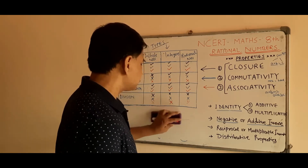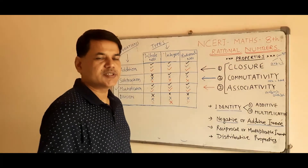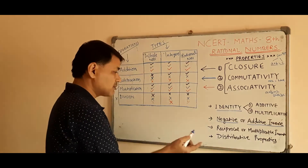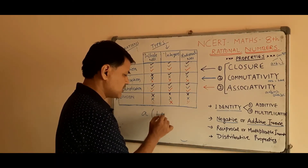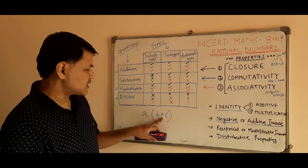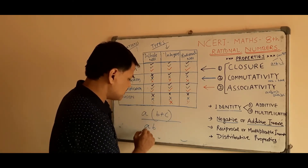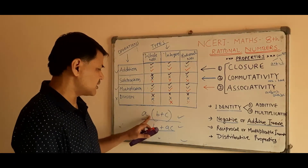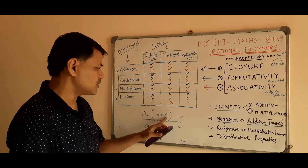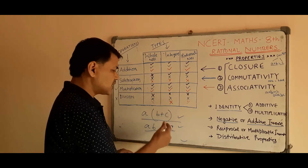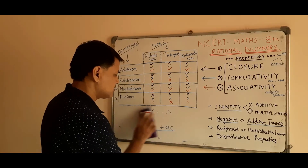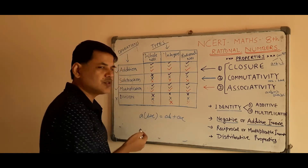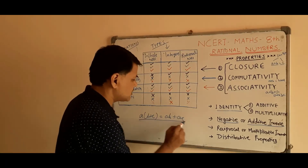The next and last topic is distributive property. As the name suggests, it is about distributing. In case of multiplication of one number with the sum of others — whether we sum first and then multiply, or multiply first and then add — both give the same result. This is the distributive property. In formula form: a times (b plus c) equals a times b plus a times c. If you remove the bracket, it becomes ab plus ac. We are distributing a over both b and c.